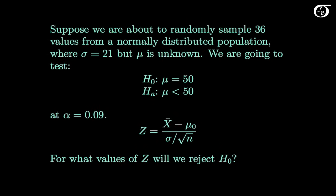Suppose we are about to randomly sample 36 values from a normally distributed population where the population standard deviation sigma is known to be 21, but the population mean mu is unknown. We wish to test the null hypothesis that the population mean is 50 against a one-sided alternative hypothesis, and we feel a significance level of 0.09 is appropriate.